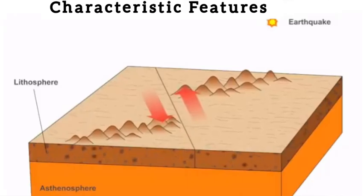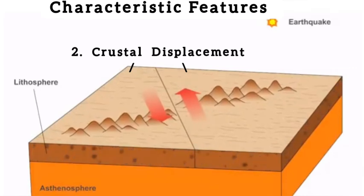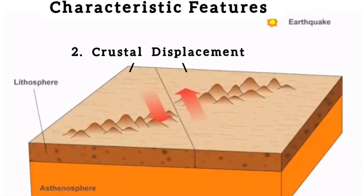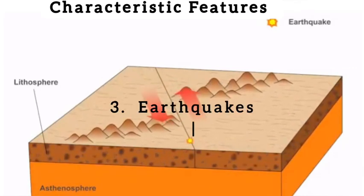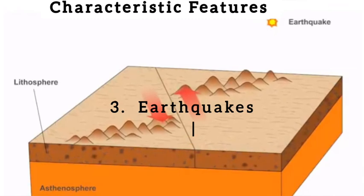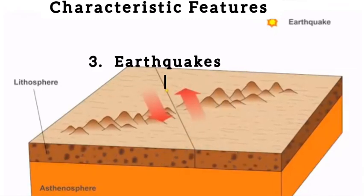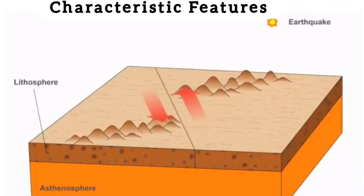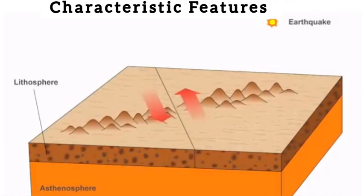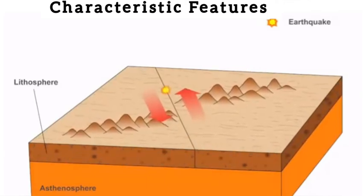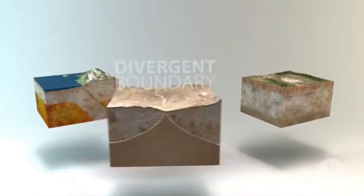The second feature is the formation of crustal displacement. The third is the occurrence of earthquakes, because the plates are moving and the resulting faulting allows seismic waves to radiate outward in the form of shaking and vibration of the Earth's crust.